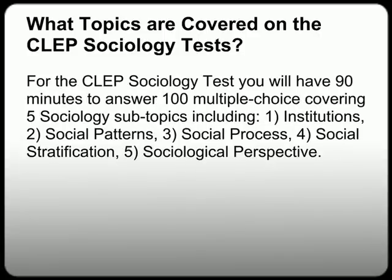For the CLEP Sociology test, you will have 90 minutes to answer 100 multiple choice questions covering 5 Sociology subtopics: institutions, social patterns, social process, social stratification, and social perspectives.